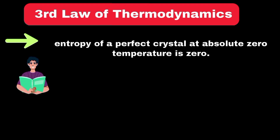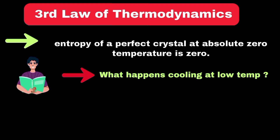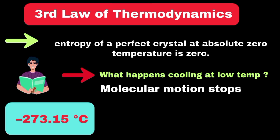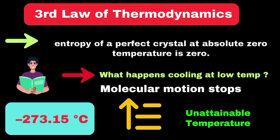To understand this deeply, let's look at what happens when we cool substances to very low temperatures. As the temperature approaches absolute zero, molecular motion almost stops and particles arrange themselves in the most ordered way possible. However, it's important to note that reaching absolute zero is impossible.